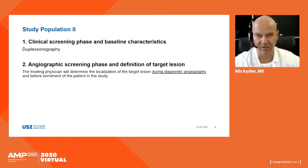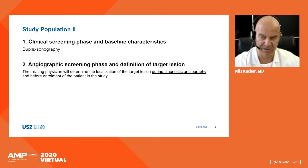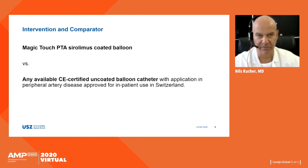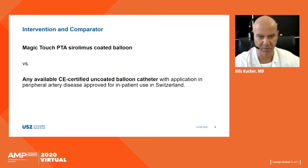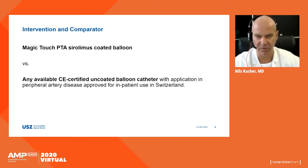There is a screening phase where non-invasive tests are performed, baseline characteristics are taken, and vascular ultrasound is included. The angiographic screening phase defines the target lesion and confirms patient eligibility for randomization. The intervention group receives the Magic Touch sirolimus-coated balloon angioplasty — all sizes are CE certified, including 3.5, 0.18, and 0.14 systems. The control group receives any CE-certified uncoated balloon catheter approved for use in Switzerland.